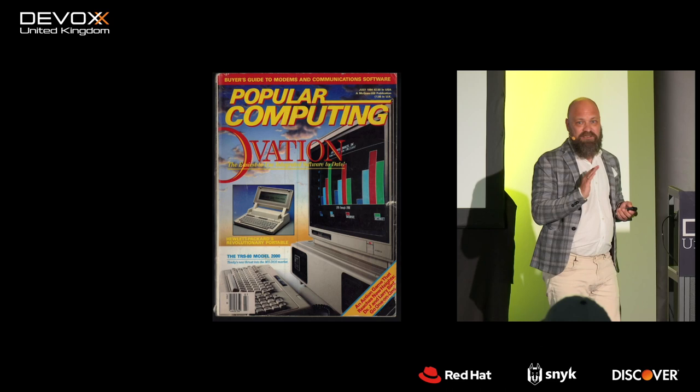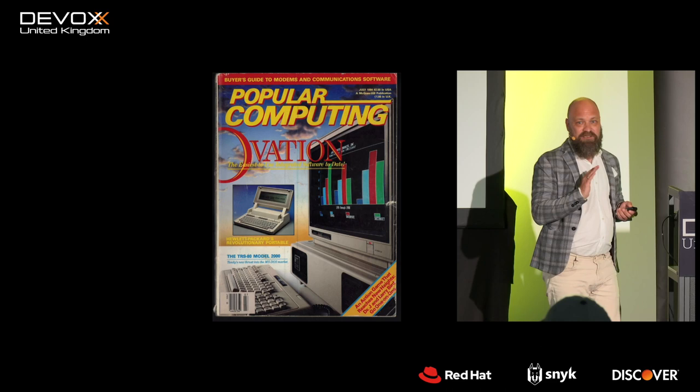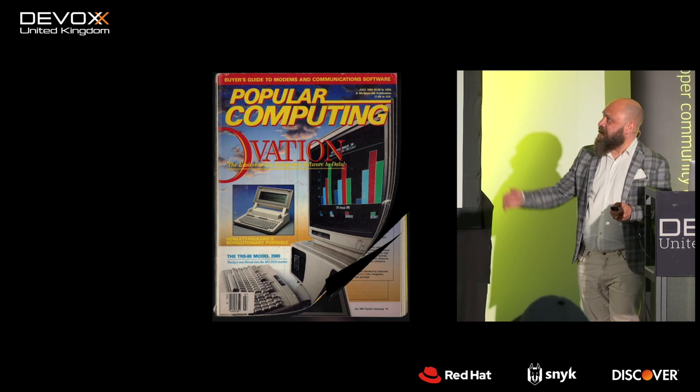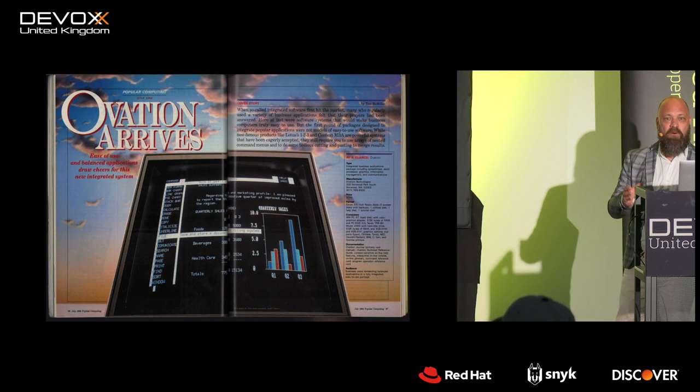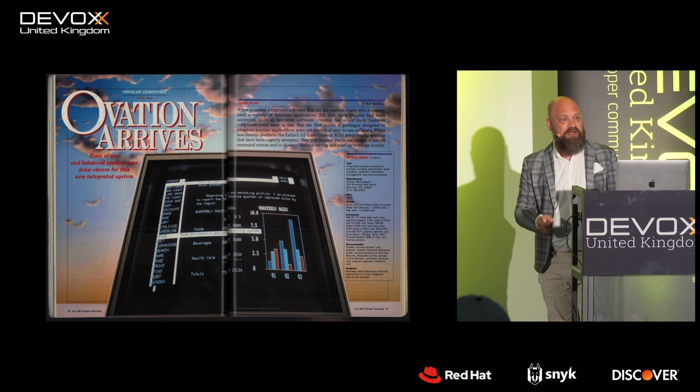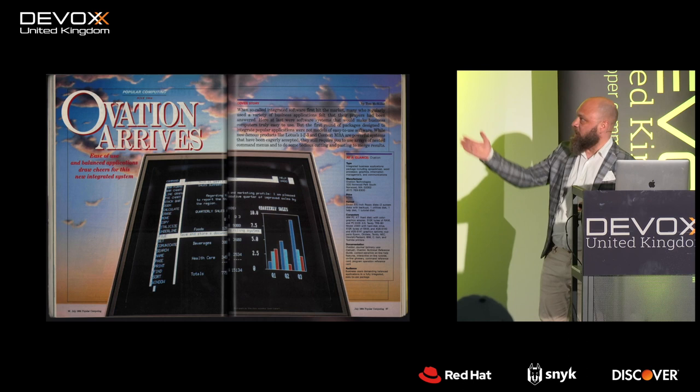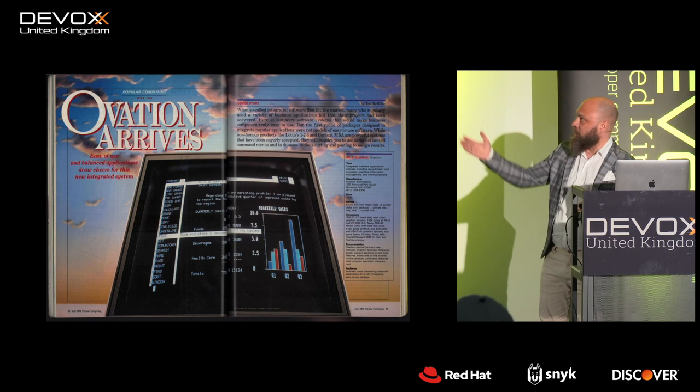Ovation Software set out to change that. They announced in 1983 their product — an integrated suite of productivity tools. You wouldn't just have a spreadsheet or a word processor; you would have a spreadsheet, a word processor, a contact management tool, a productivity database, a communication package, and everything rolled into one.